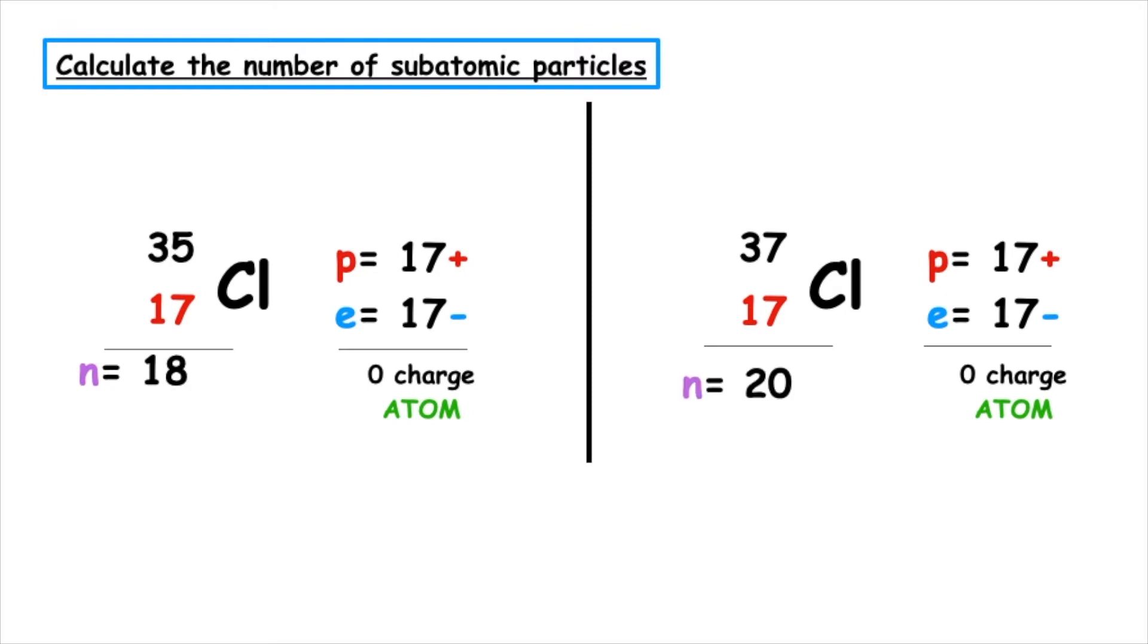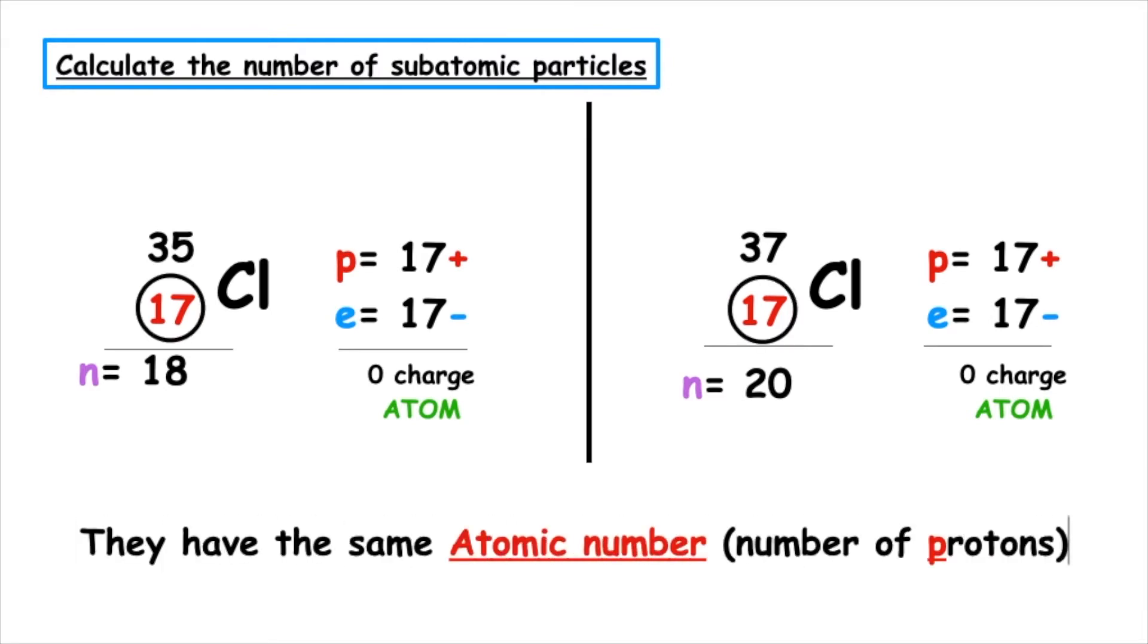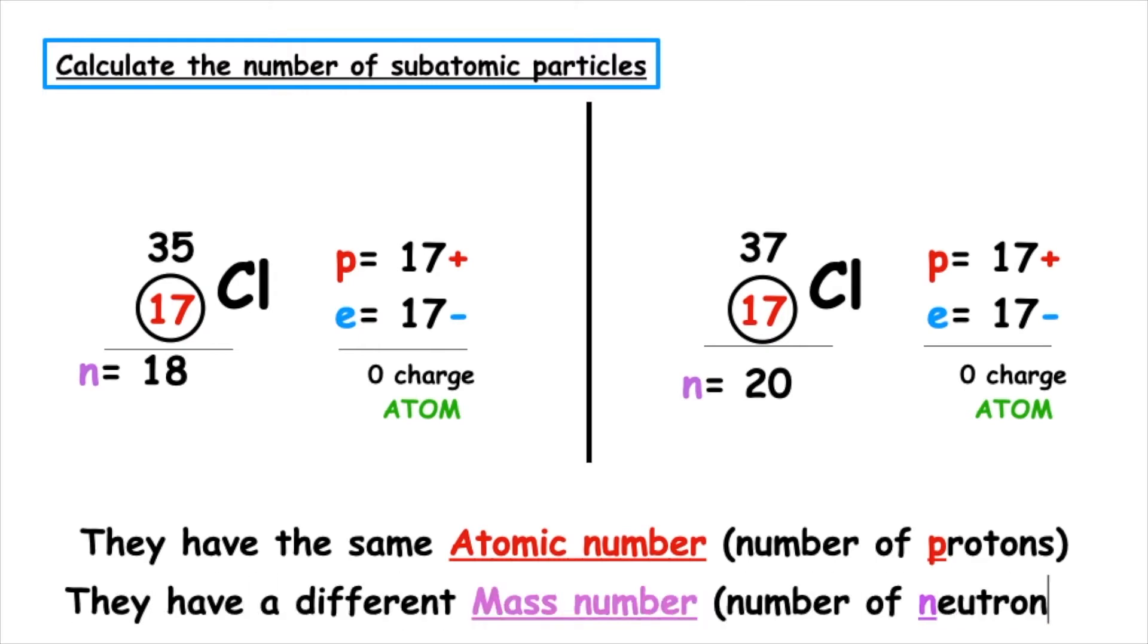So when we're comparing these, which allows us to get the definition of an isotope, they have the same atomic number, which means they have the same number of protons, but they have a different mass number, which is a different number of neutrons.